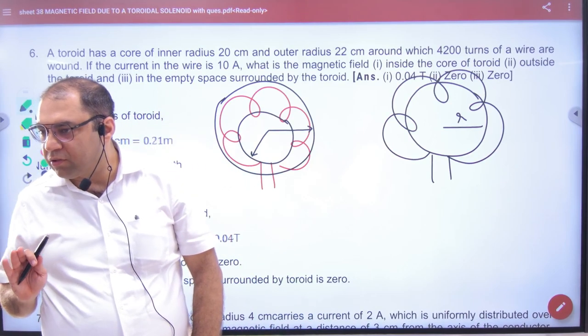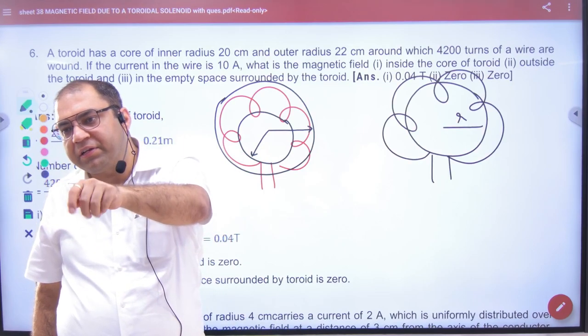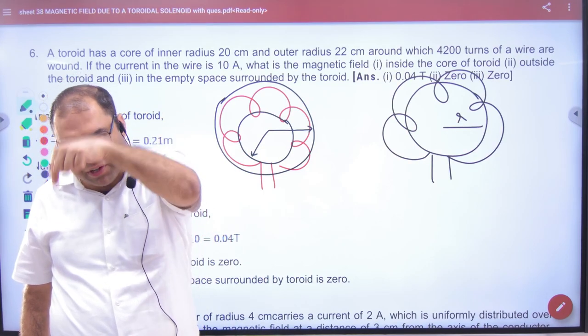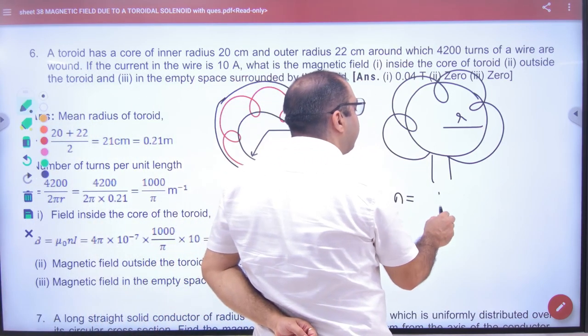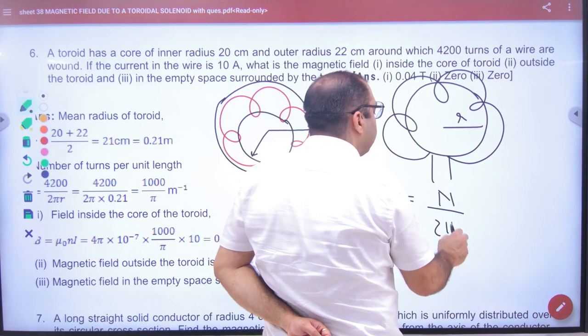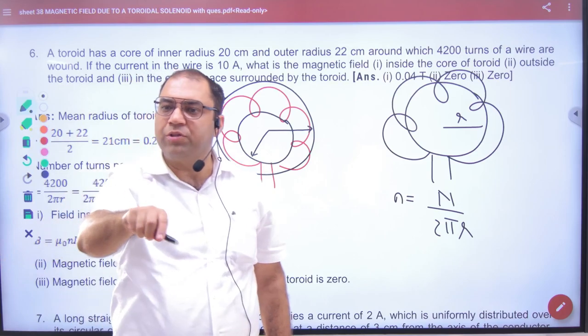Because when we find B, where is the axis? The circle from the axis. We divide the number of turns per unit length - which length? 2πR. What does R have to be? That circle radius from the center.